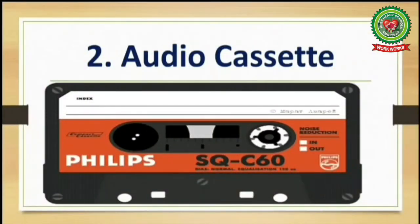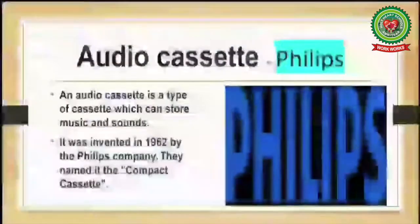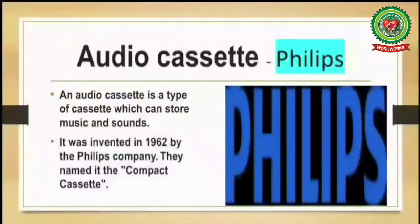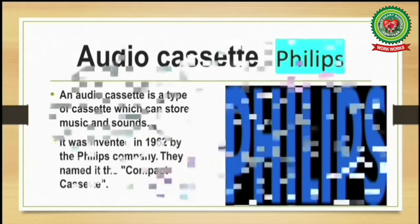Next is the audio cassette. An audio cassette is a type of cassette which can store music and sounds. It was invented in 1962 by the Phillips company. They named it the compact cassette. Nowadays cassettes have been replaced by CDs.